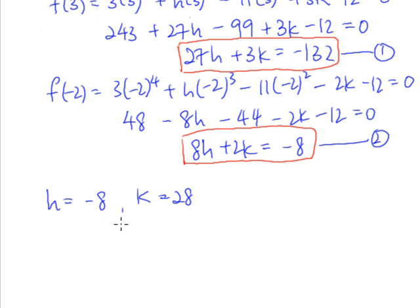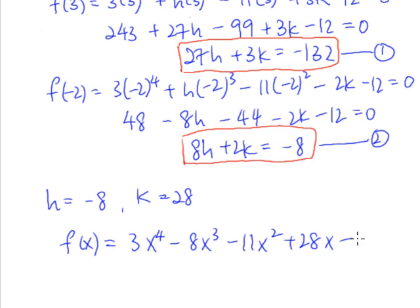So after we get h and k, we will know that our function is indeed 3x power 4 minus 8x cube minus 11x square plus 28x minus 12.